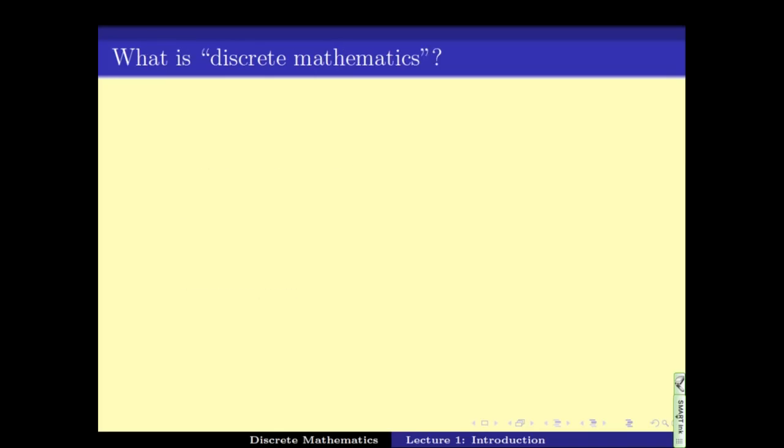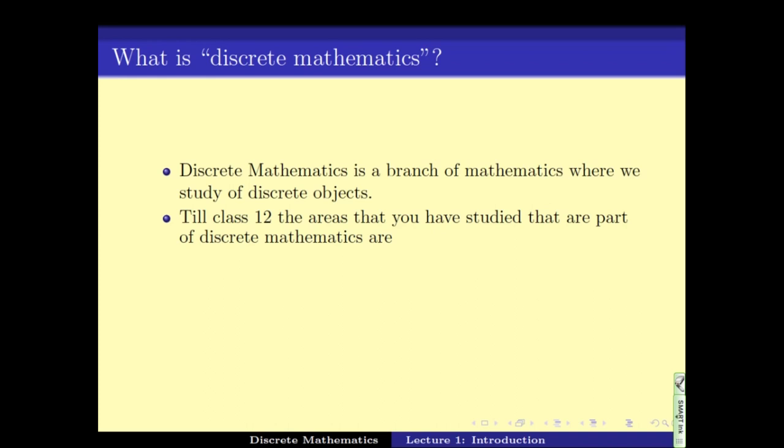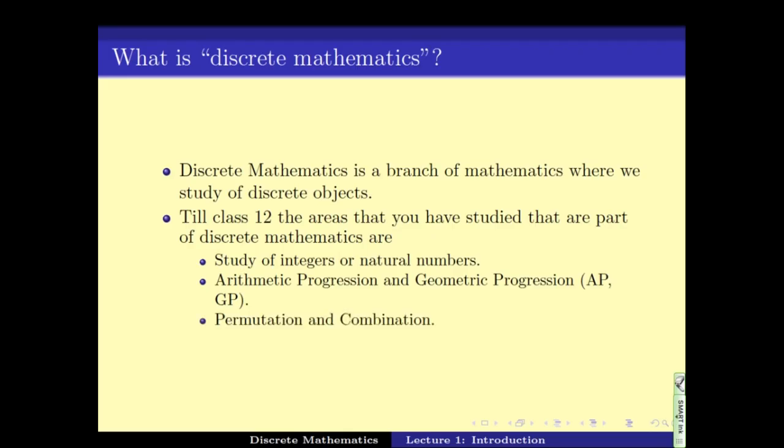And now to go back to the question of what is discrete mathematics. Again, discrete mathematics is the branch of mathematics where we study discrete objects. So till your class 12, you have done a number of subjects in math, out of which subjects like study of integers and natural numbers, arithmetic progression, geometric progression, permutation and combination, all these comprise subjects related to discrete mathematics.